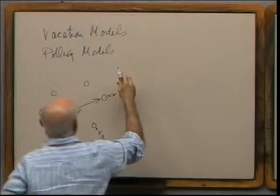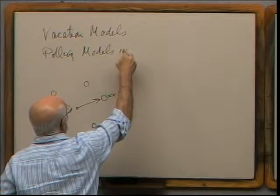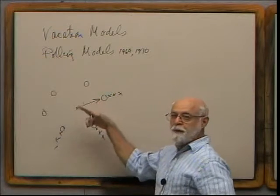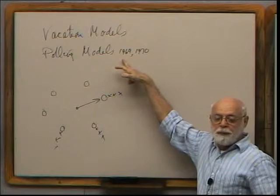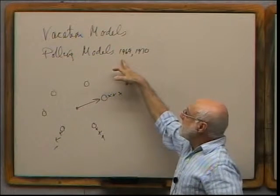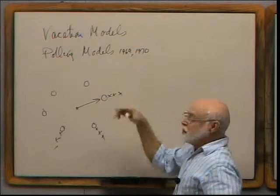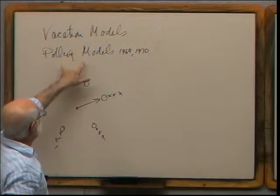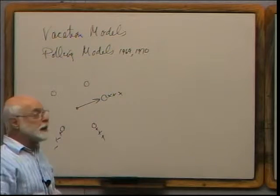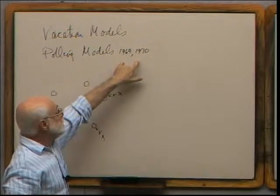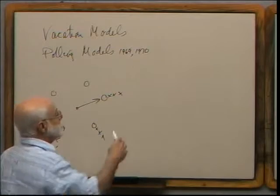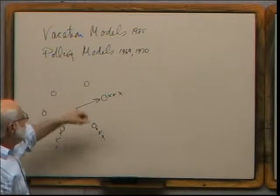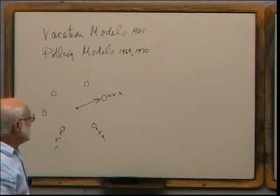The way this polling model was originally handled was in two papers by myself and Grace Murray and one by myself alone — in 1969 and 1970. These were the original models in which it wasn't assumed that the queues were independent of each other. You can find these by going to my website; in particular the two papers from the Bell System Technical Journal, which is hard to get now because that journal no longer exists. You can download those two papers, and also the 1985 vacation models paper written with Steve Fuhrmann.